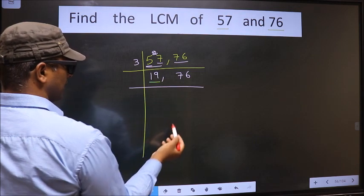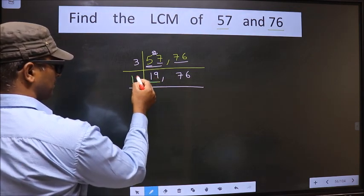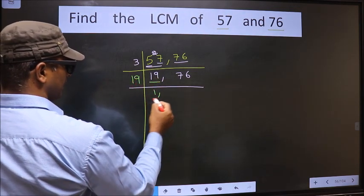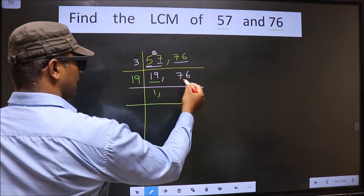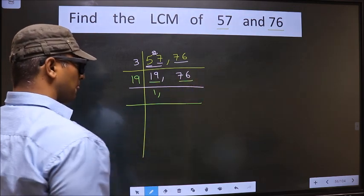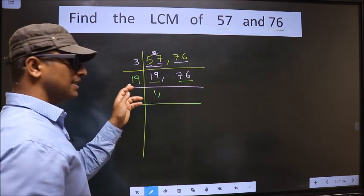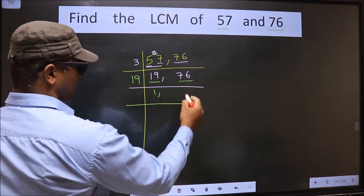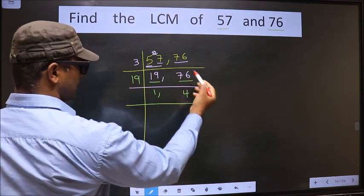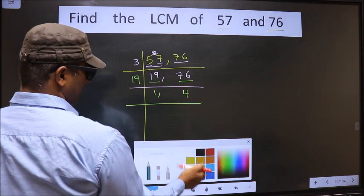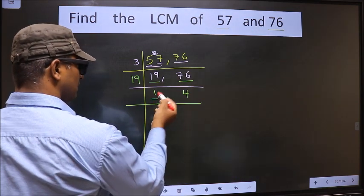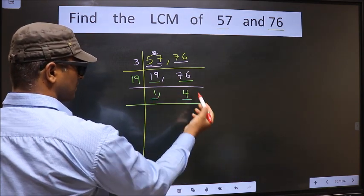Now here we have 19. 19 is a prime number. So 19 once 19. The other number 76. When do we get 76 in 19 table? 19 fours is 76. We got 1 here. So focus on the other number that is 4.